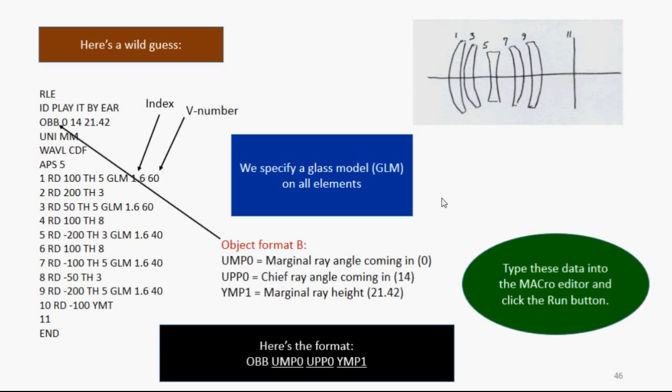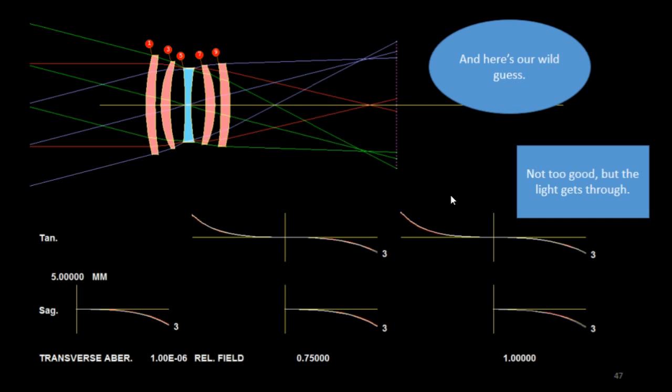Now you want to type these data into the macro editor and click the Run button. And here's what comes back. This is our wild guess. It's not too good, but hey, the light gets through. Now we're going to optimize this lens.